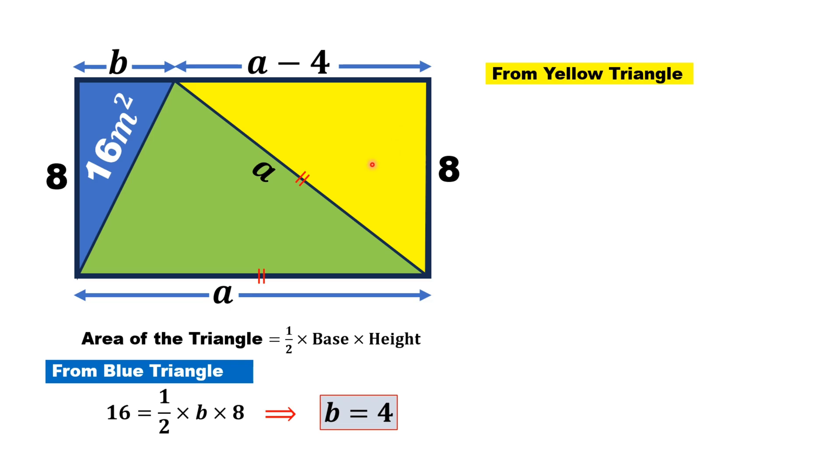Using this on the yellow triangle, we get A squared equals (A minus 4) squared plus 8 squared.